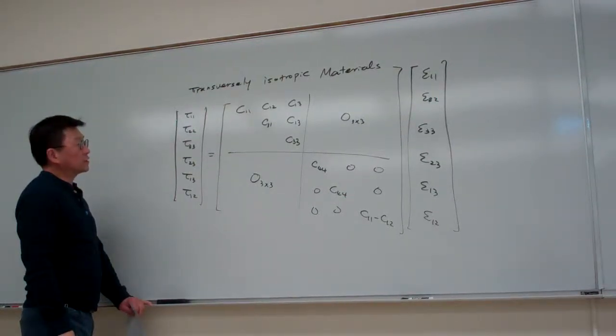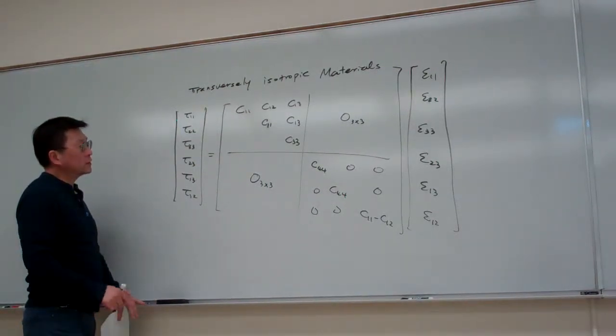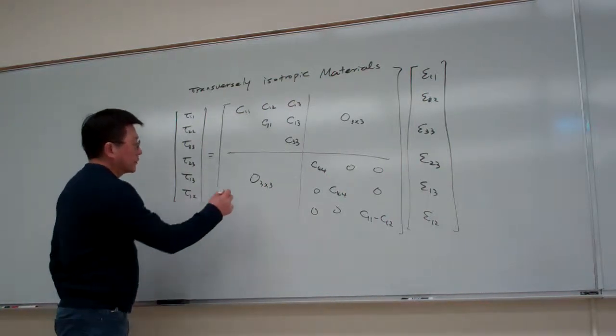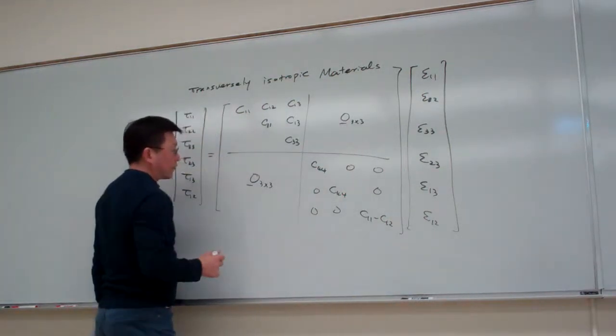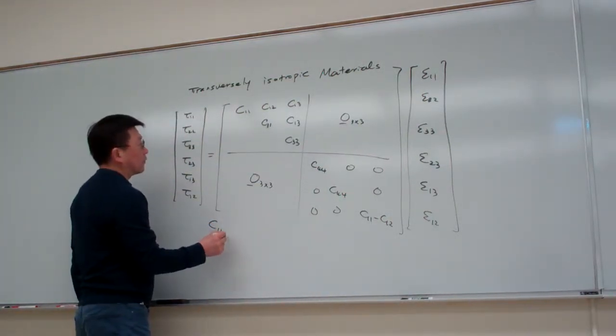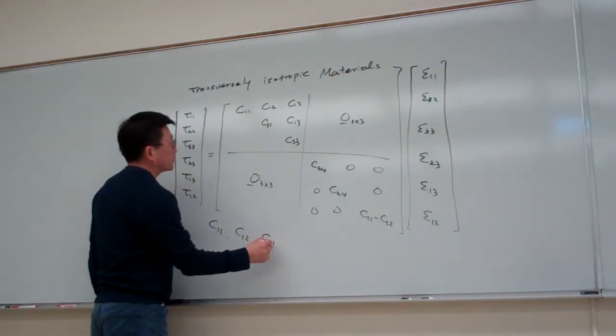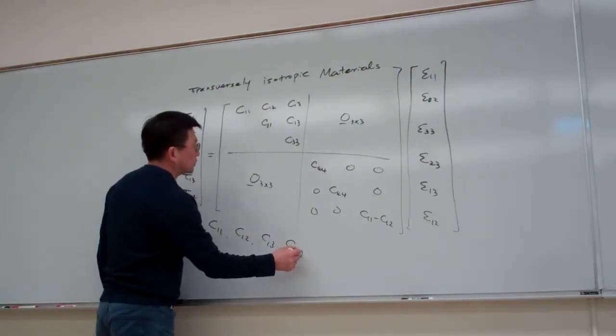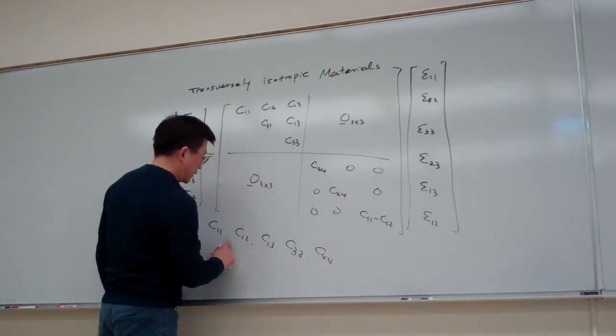One of the transverse isotropic materials. And here we have five parameters, basically the C11 and C12, C13, and C33 and C44. One, two, three, four, five.